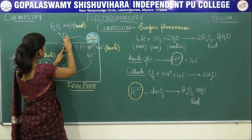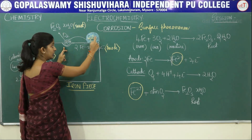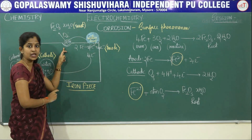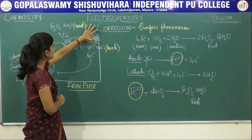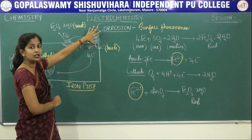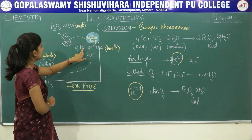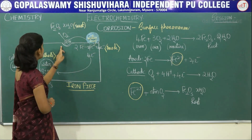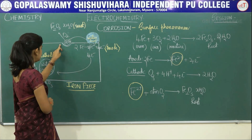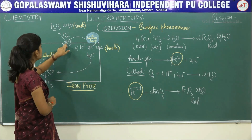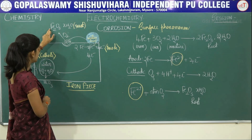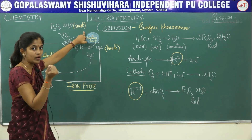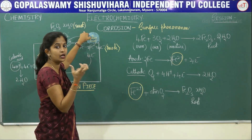These iron ions further react with atmospheric oxygen — not just dissolved oxygen — to form rust. Fe²⁺ ions react with atmospheric oxygen to produce Fe₂O₃·xH₂O, which is your rust — the brown powder you get upon touching corroded iron.